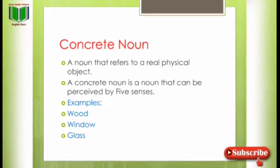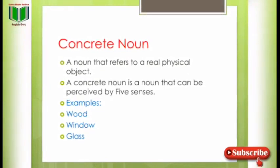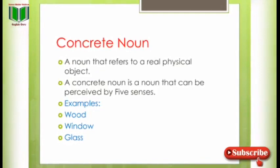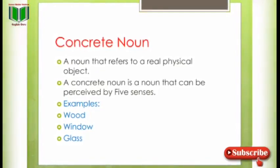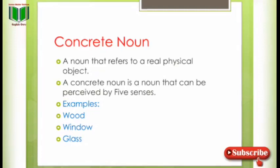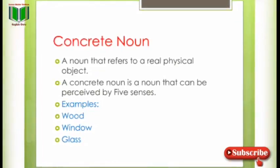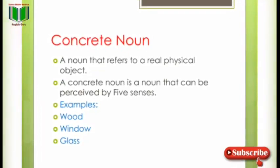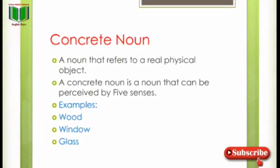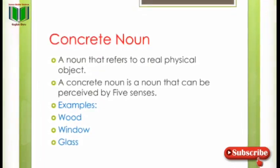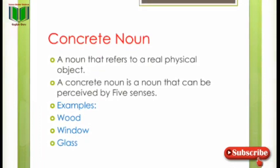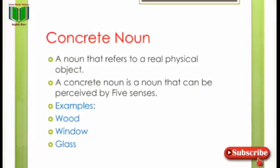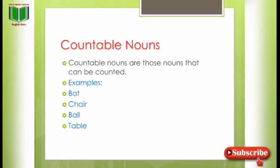Concrete noun is basically the opposite of abstract noun. A noun that references a real physical object — a concrete noun is a noun that can be perceived by the five senses۔ مطلب آپ اسے دیکھ بھی سکتے ہیں اور چھو بھی سکتے ہیں۔ Examples: wood, window, glass. Abstract noun نظر نہیں آتا جبکہ concrete noun واضح اور نظر آنے والا ہوتا ہے۔